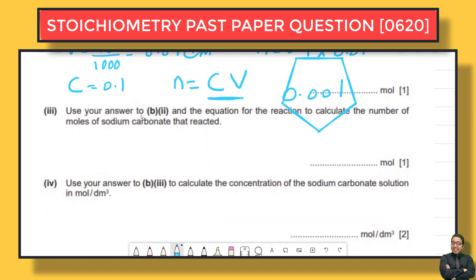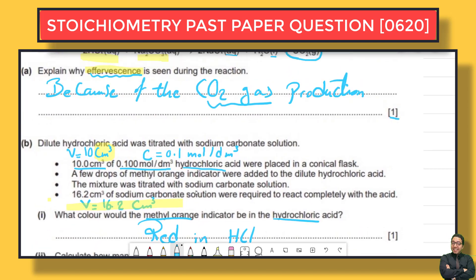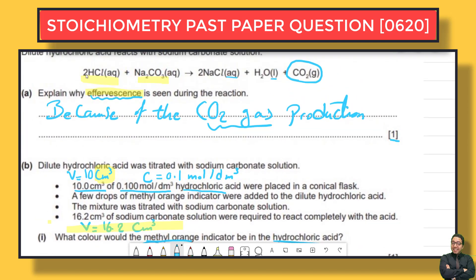Part iii: use your answer from part ii and the equation for the reaction to calculate the number of moles of sodium carbonate that reacted. Looking at the equation: for every 2 moles of HCl, we have 1 mole of Na₂CO₃. So the ratio is 2 to 1.